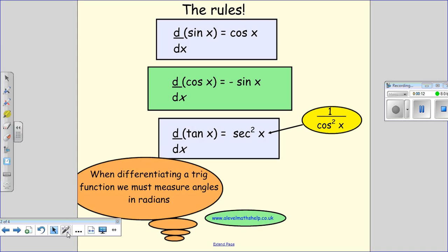Before we get going, we just need to be sure that we're happy with how you differentiate the basic trig functions. So d/dx(sin x) = cos x, d/dx(cos x) = -sin x, and d/dx(tan x) = sec²x.